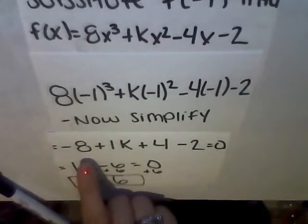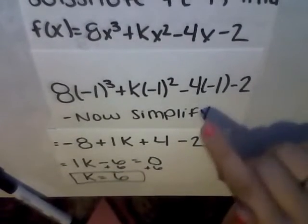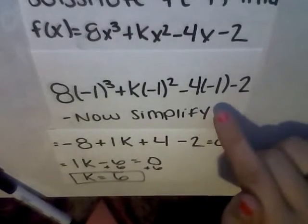So, 8 times negative 1 to the third is negative 8 plus k times negative 1 to the second power is 1k, and then negative 4 times negative 1 is positive 4, and then minus 2 equals 0.